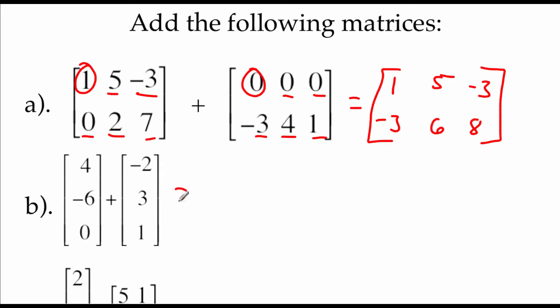If we look at example B, again checking the orders, we've got three rows, one column on both of those things. So I'm just going to start adding pieces together. So we get 4 and negative 2, that's 2. Negative 6 plus 3 is negative 3. And 0 plus 1 is 1.